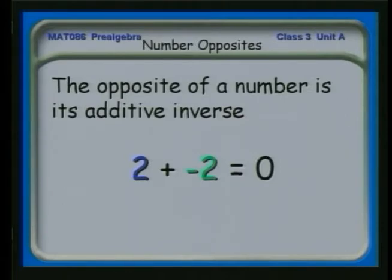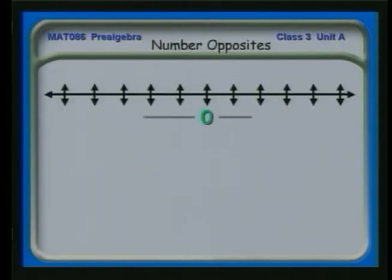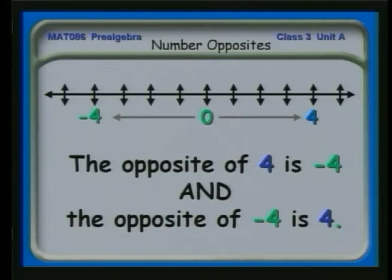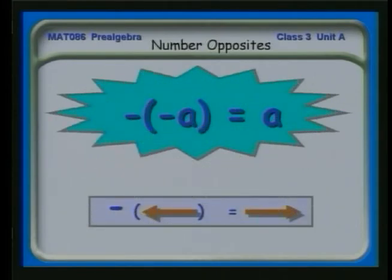Here's the thing about opposites or additive inverses: if you add together additive inverses, they add to zero. Plus two plus minus two adds to zero. So if I have two dollars and give someone the two dollars I owe them, I'm left with nothing. The opposite of four is minus four, and the opposite of minus four is plus four. In general, if you take the opposite of a negative number, you get a positive number. Therefore, if I have in math minus a minus, that gives me a positive. So if in a mathematical expression I see minus a minus, I can change those two minus signs to a plus.